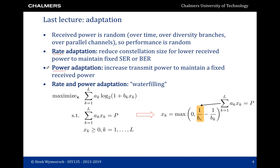Secondly, power adaptation, where we fix the constellation size but adapt the power to maintain a certain SNR level at the receiver. This turns out to work quite poorly, because we need to devote a lot of transmit power to the very poor channels. And finally, rate and power adaptation, also known as water filling, where we solve a convex optimization problem leading to a water filling solution. This assigns power only above a certain threshold, when the channel is sufficiently good, and we assign more power to good channels than to bad channels.